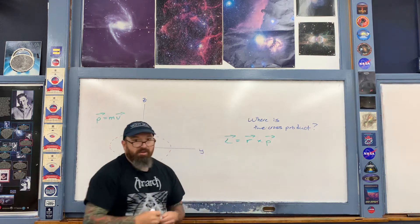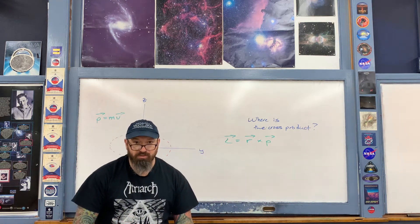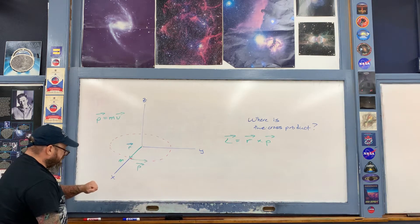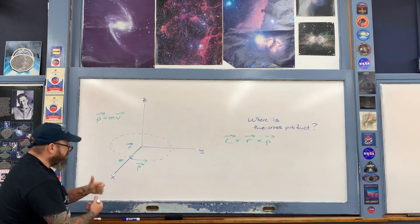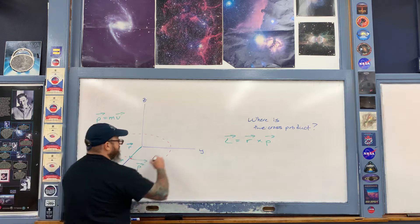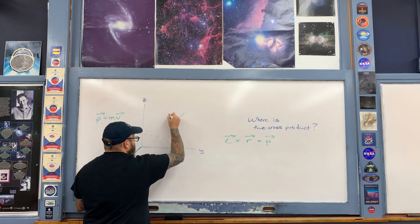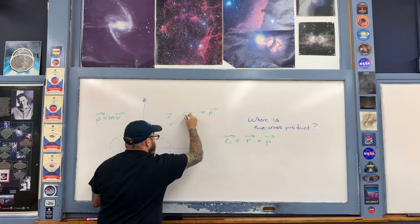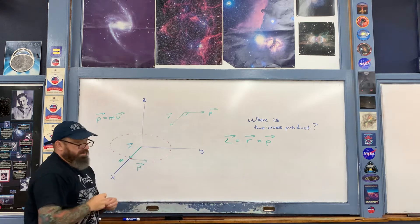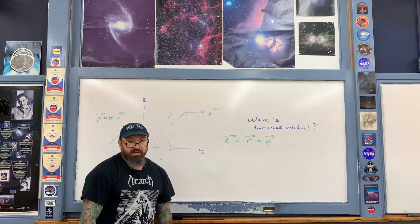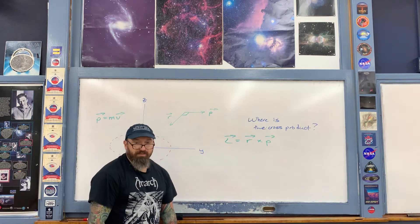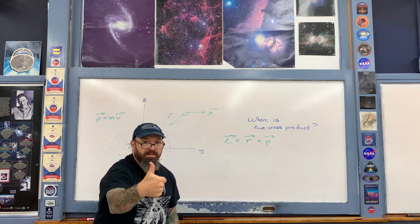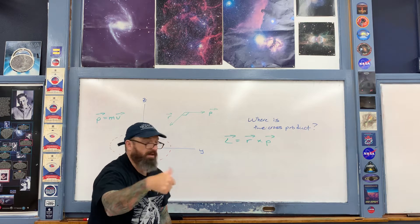Now let's show the right-hand rule with these vectors. You have to picture the angle between r and p as 90 degrees on this diagram. So right here is r, and here's the p vector. There is the right angle between them. Therefore, you would describe the cross product r cross p in the following manner, which gives us the angular momentum vector L upwards.